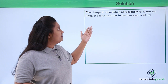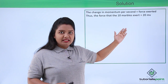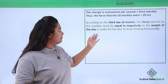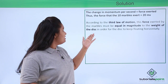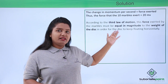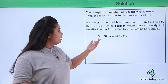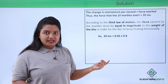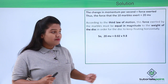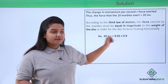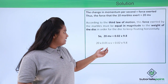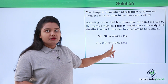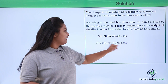The force that the 10 marbles exert we have found to be 20mv. According to the third law of motion, this force exerted by the marbles must be equal in magnitude to the weight of the disk in order for the disk to keep floating horizontally. So basically 20mv must be equal to the weight of the disk, which is given by the mass of the disk multiplied by the acceleration due to gravity: 0.02 × 9.8. So this turns out to be 20 × 0.01 × v = 0.02 × 9.8.